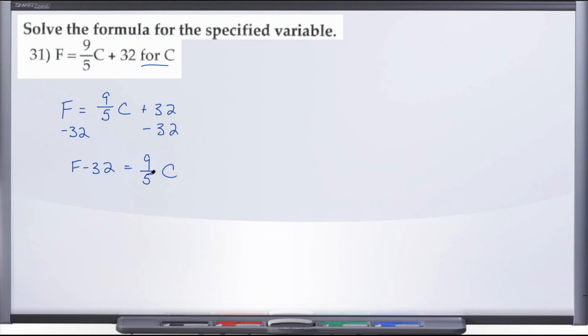So let's multiply both sides of this equation by the reciprocal 5/9. Multiply here by 5/9, we'll multiply here by 5/9, and here on the right, 5 and 5 cancel, 9 and 9 cancel, so we're just left with C.